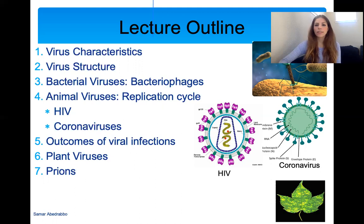We're going to end with plant viruses and prions. Prions have really nothing to do with viruses — they're just grouped into this lecture because they're also acellular, meaning not cells, and they can be very fatal. So we'll talk about that at the end.